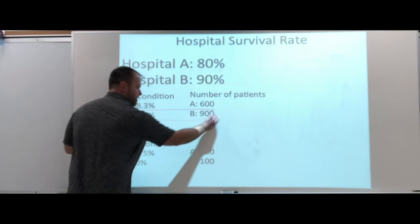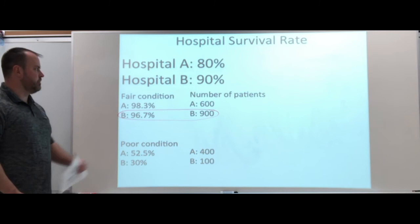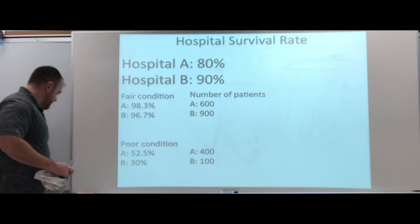This is probably the one causing the most difference. 900 people at the 96.7% is bringing Hospital B up to that 90%. And that's the overall rate.